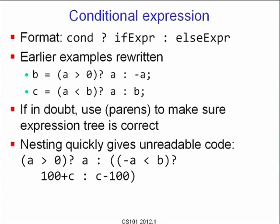We have also seen conditional expressions. We can rewrite earlier examples: 'b = (a > 0) ? a : -a', or 'c = (a < b) ? a : b'. If in doubt, always use parentheses to make sure the expression tree is correct, and note that nesting quickly gives unreadable code.